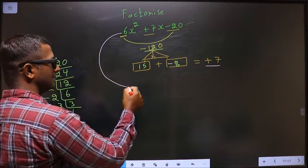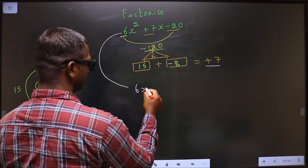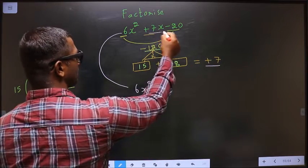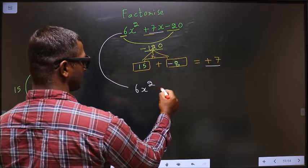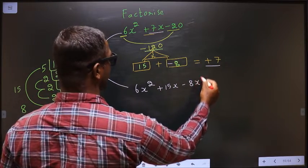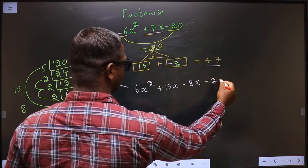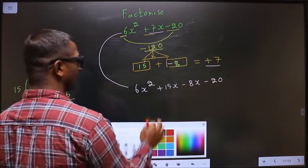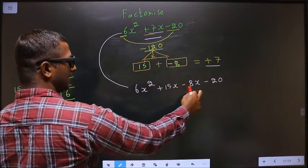Next, this will change. In place of 7x, now we write +15x - 8x. So 6x² + 15x - 8x - 20. Clear? In place of 7x, I have written this.